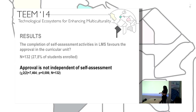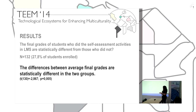For the first question, focusing on the B-learning group — students who had enrolled in previous years and not been approved — we found that approval was not independent of self-assessment. If a student did the self-assessment, it was more likely they got approved in the curricular unit. Regarding final grades, there were statistically significant differences between the average final grade of the group that did the self-assessment quizzes and the group that didn't. The group that did had better grades.